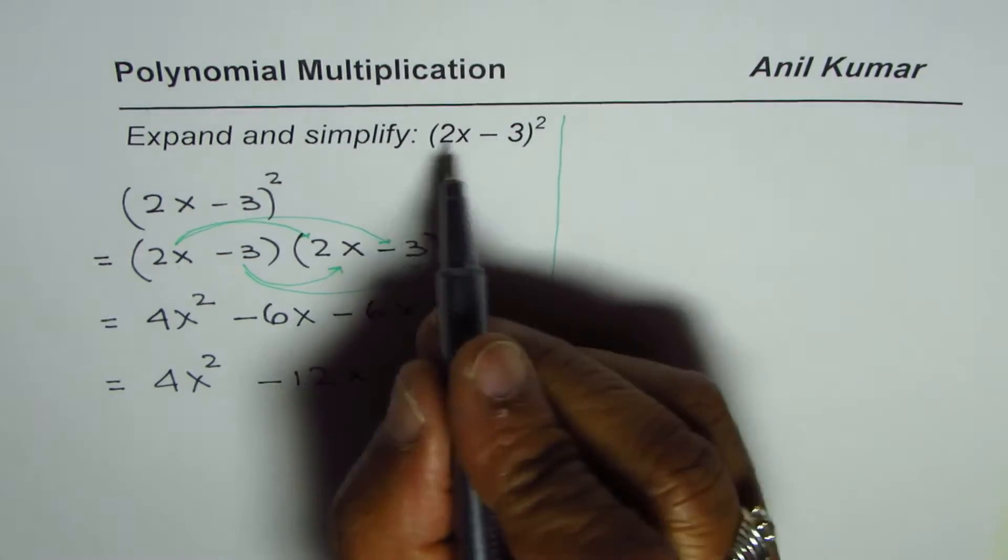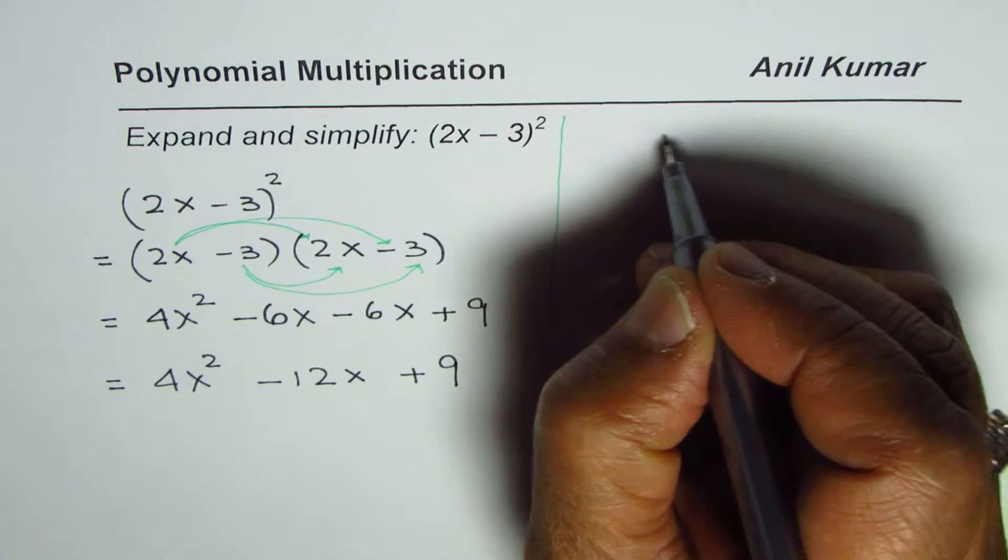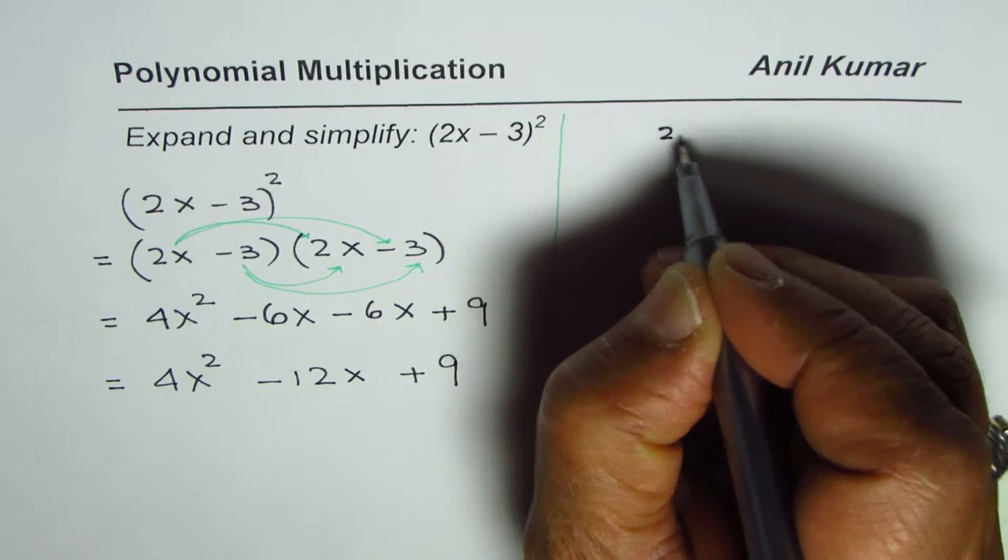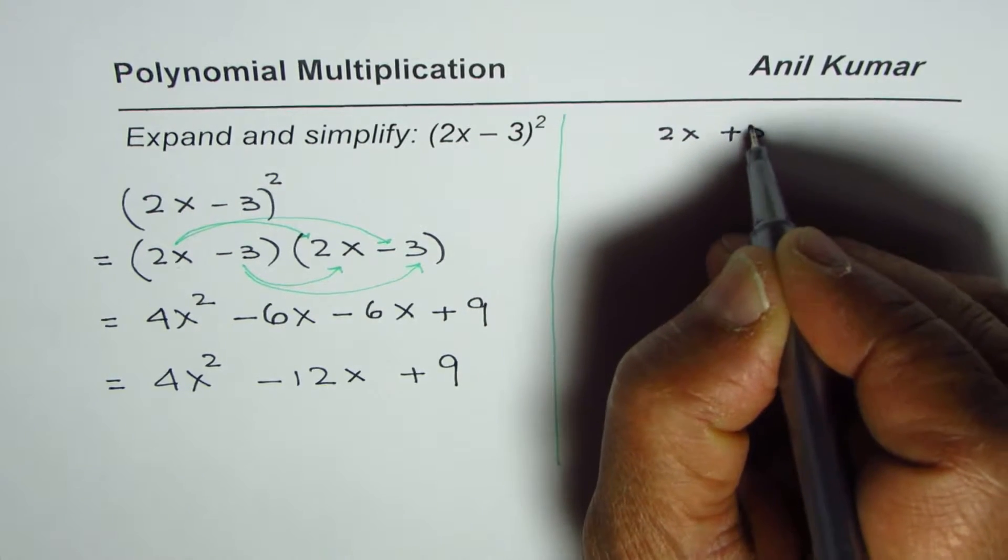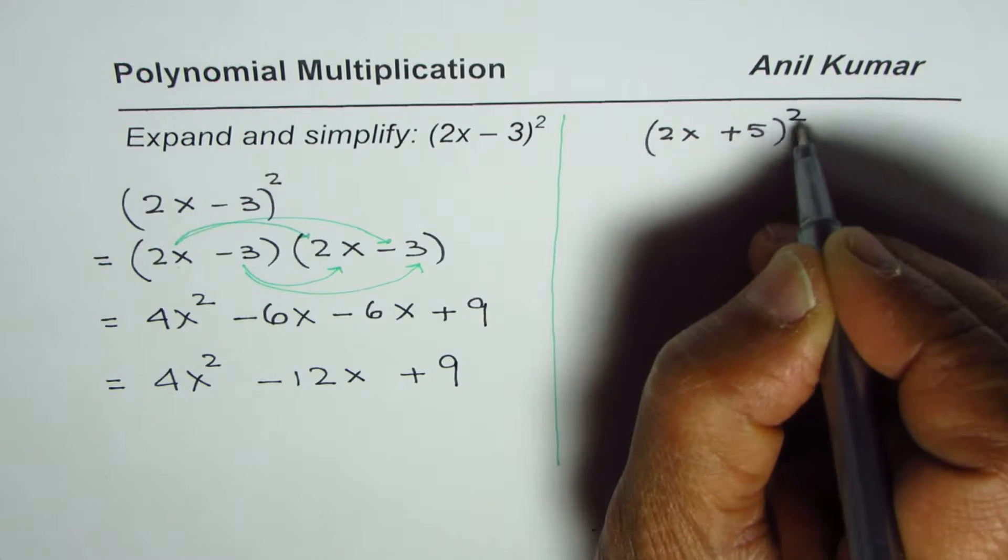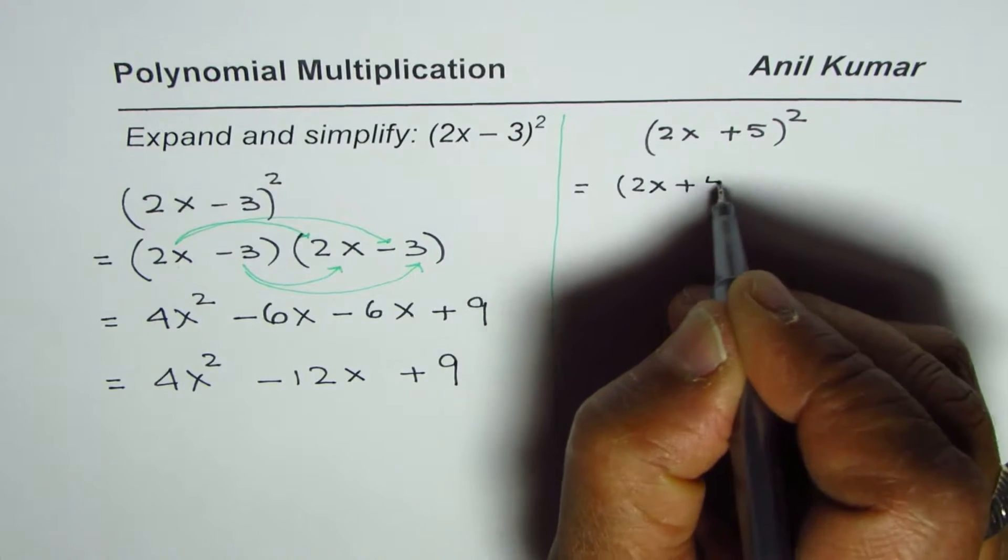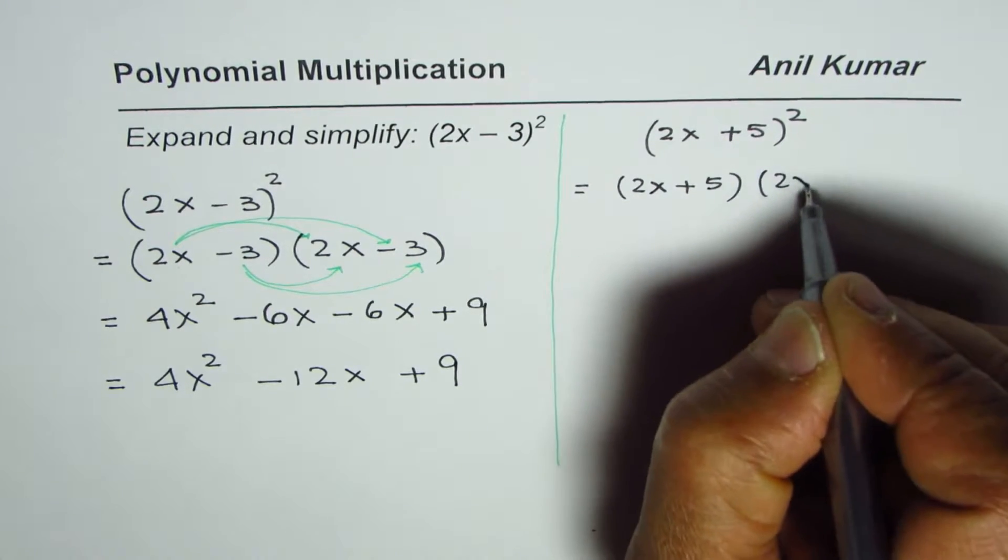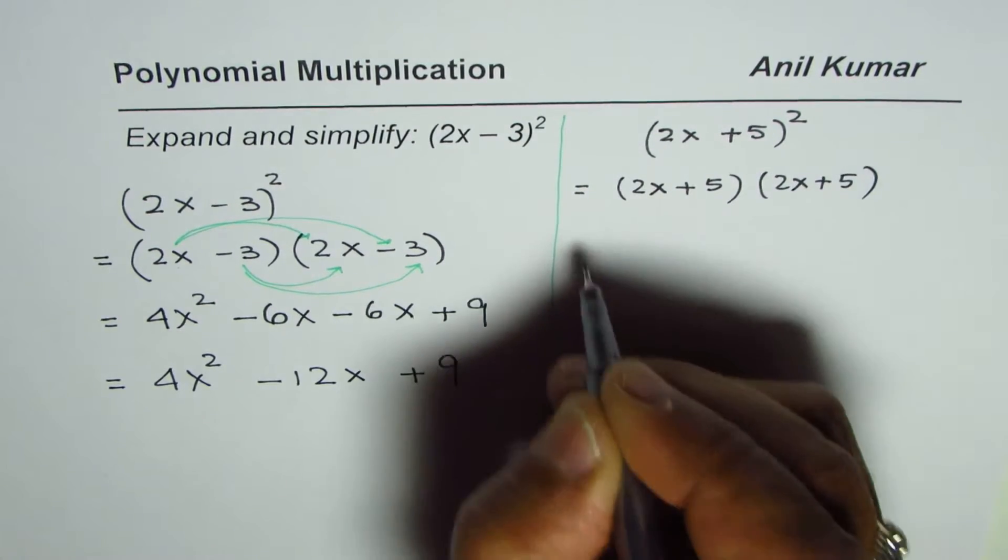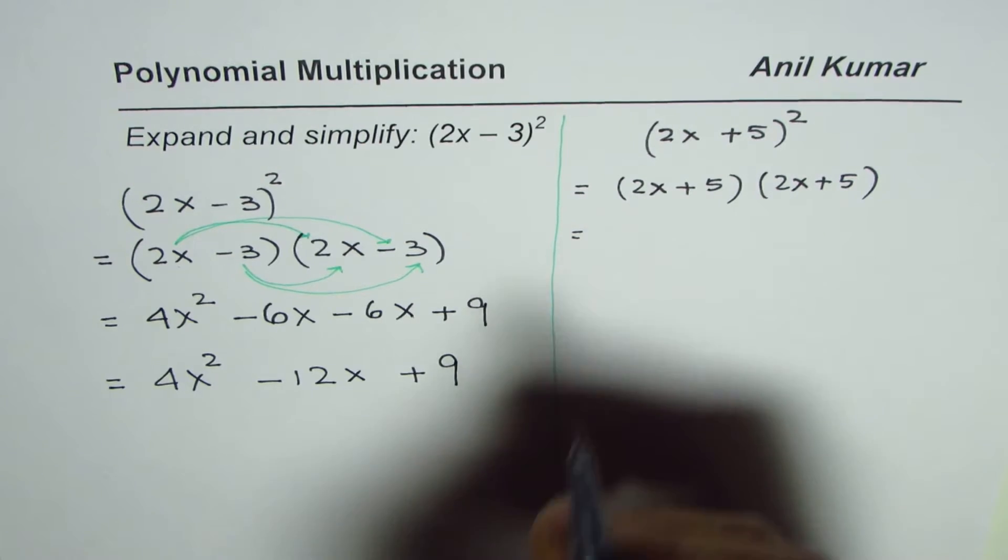Let's take up another question. And this time, let us say we have (2x + 5)². We'll go through this process again. So that really means it is (2x + 5) times (2x + 5). We have to apply the distributive property.